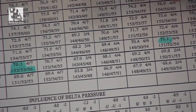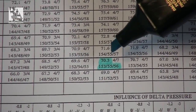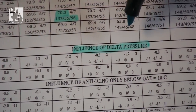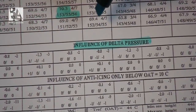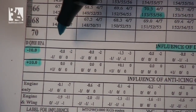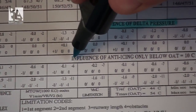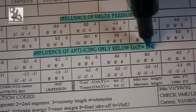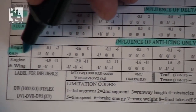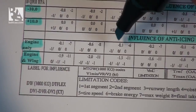Let's stay with configuration 1 plus flaps. After determining our speeds, we have to check the influence of delta pressure, which we can find here. This means that if we have a different pressure than standard — minus 10 or plus 10 hectopascals — we should do corrections accordingly. Then we have the influence of anti-icing, only below an OAT of 10 degrees centigrade. There are two options: engine-only anti-ice, and engine and wing anti-ice, with corrections noted in the table.